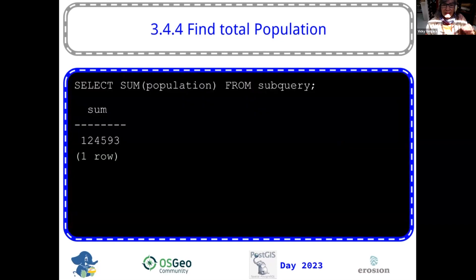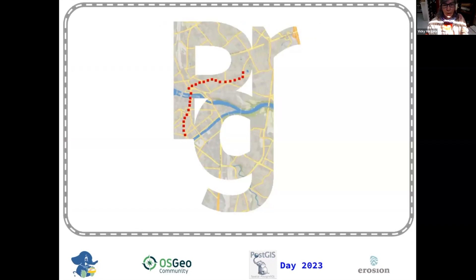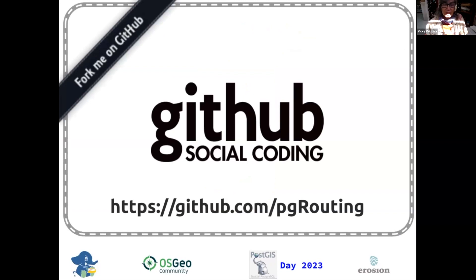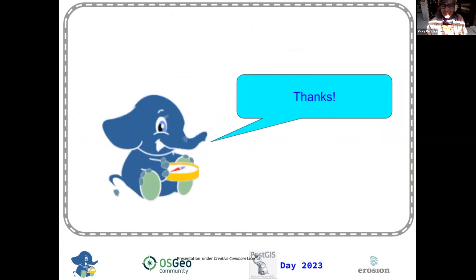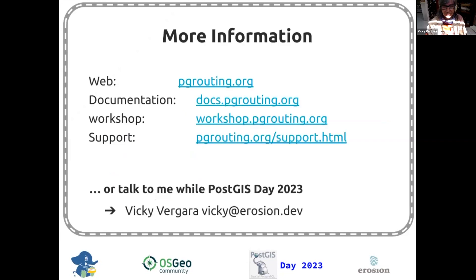We want to find the total population. With exercise 3.4.4, we get that number, and it's left to the students to create a function based on that. You can work PG routing from GitHub. Thanks — and don't forget to contact me if you need the OSU ID.